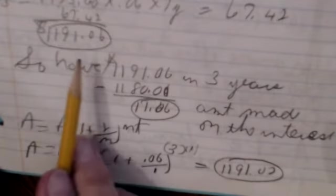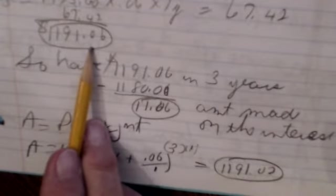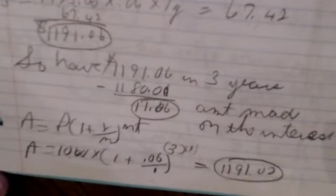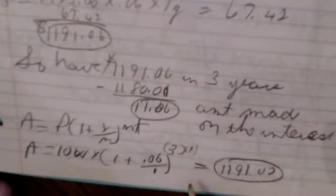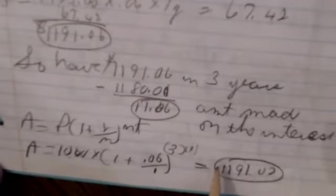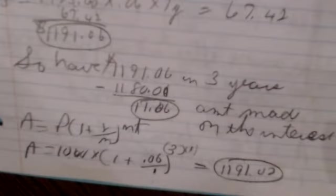Now the reason it's not exactly the same as my $1,191.06, we did some rounding off. So keep in mind that your compound interest means that you're getting interest on all the money.